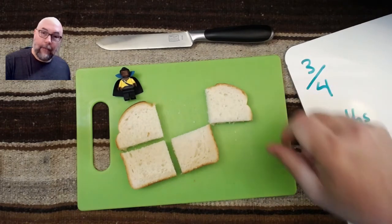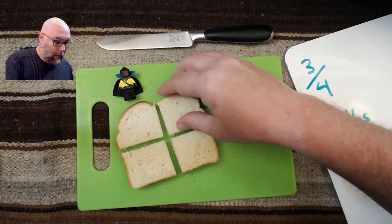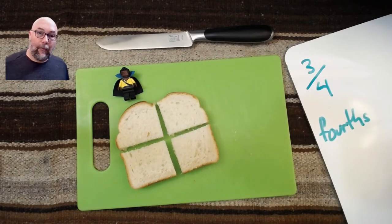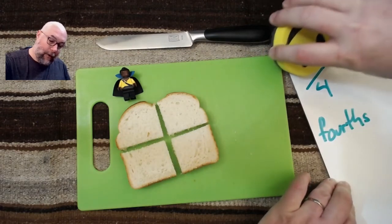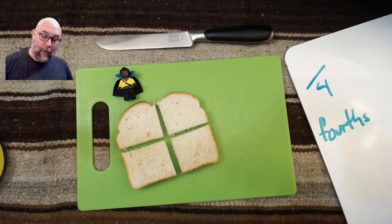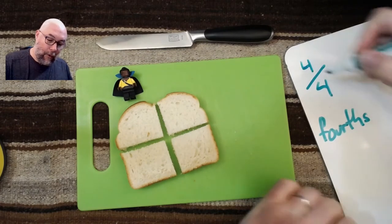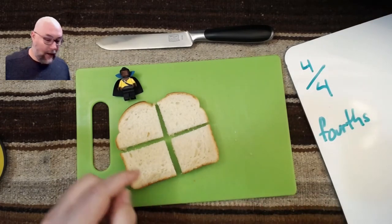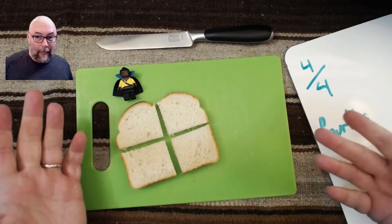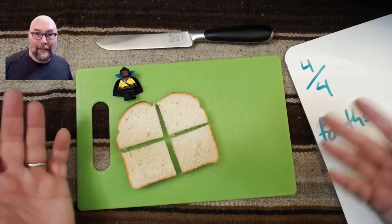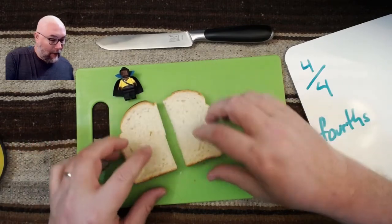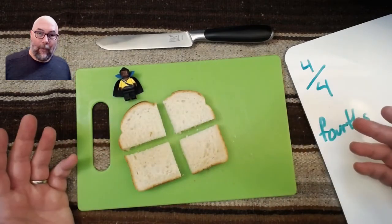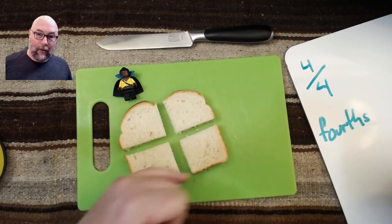And the same thing applies if I put in another one. We are going to have something called four fourths. Now, you can probably figure out what that means. If I have four fourths, then I have all the fourths, so I have them all. So I have one slice of bread when I put them all together. But in our case, for now, this is just four pieces that are called one fourth.